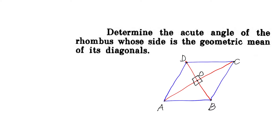Let us say the diagonals are d1 and d2. We know that in a rhombus, diagonals bisect each other at 90 degrees, so we can write: this is d1/2, this is d1/2, this is d2/2, and this is d2/2. We have been given that the side is the geometric mean of its diagonals, so the side equals √(d1·d2).